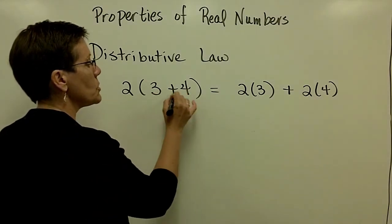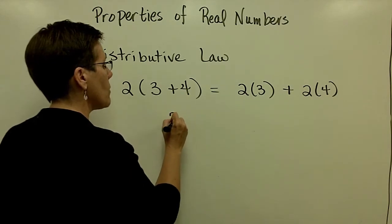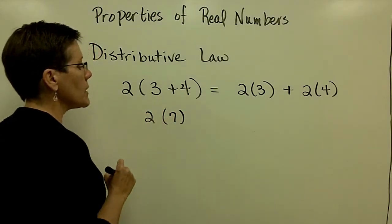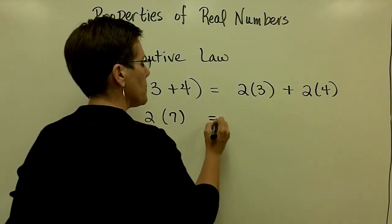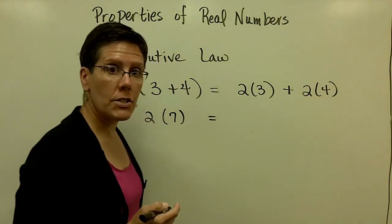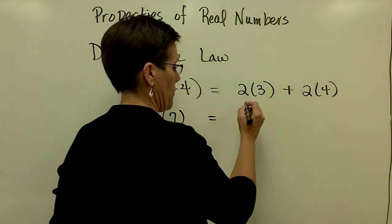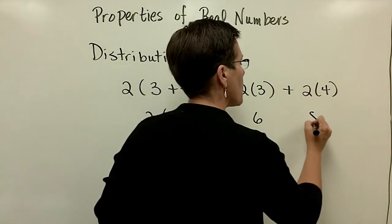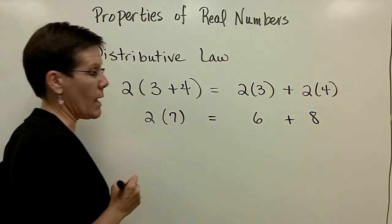Over here, order of operations says you should do what's in the parentheses first, which is add 3 and 4 and get 7, and then multiply it by 2. Over here, order of operations says that you'd multiply first. So 2 times 3 is 6, 2 times 4 is 8, and then you'd add.